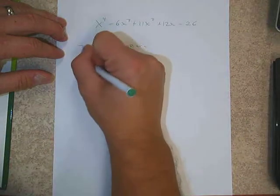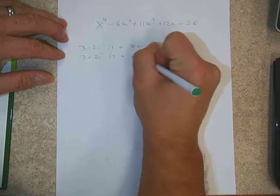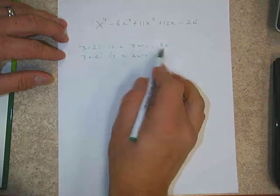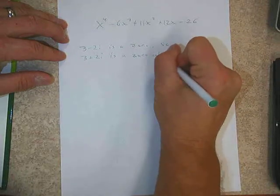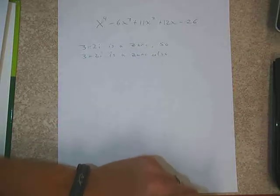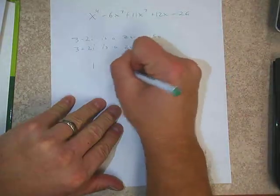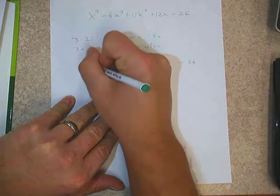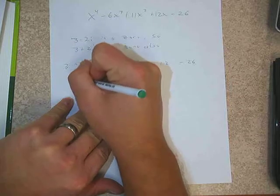If our rational possibilities don't allow us to break that down at all, we'd have to be given some other information. Luckily for us, we were — they told us that 3 minus 2i is a zero. So they gave us one of the zeros. And since we're looking for four, they really gave us two, because 3 plus 2i is also a zero. So I'll write: 3 minus 2i is a zero, therefore 3 plus 2i is a zero also.